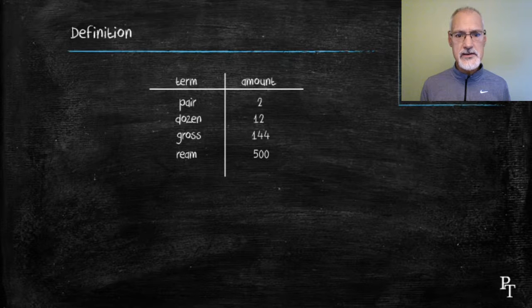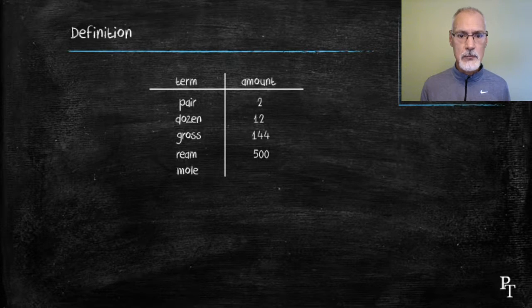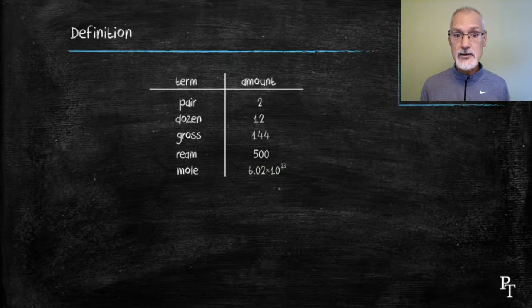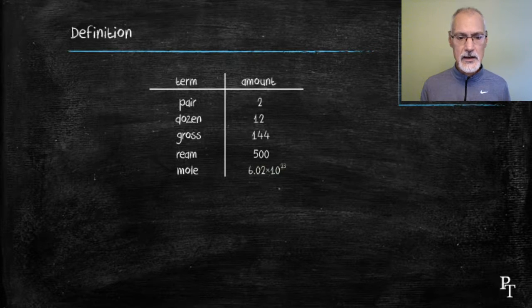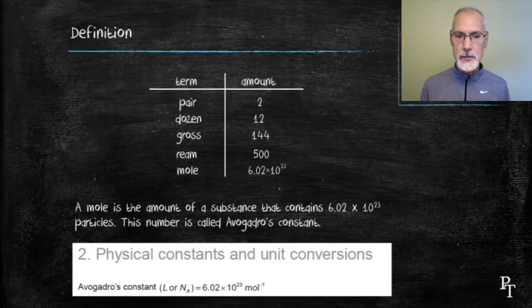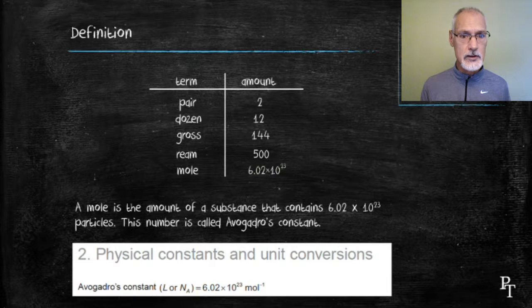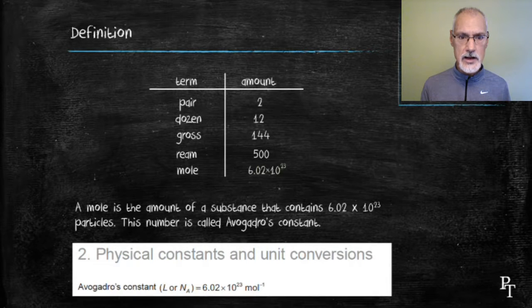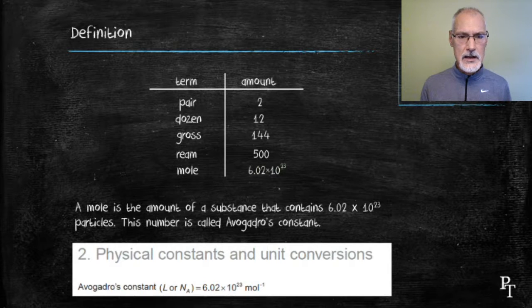So words can be associated with numbers, and the chemists use the word mole. A mole is associated with 6.02 times 10 to the 23rd particles. That number is called Avogadro's number, 6.02 times 10 to the 23rd. And it's available in your IB data booklet under your constants chapter.